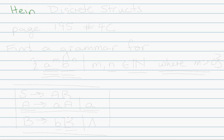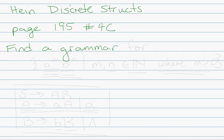I'm going to do a problem from Heinz's Discrete Structures book. The first one I'm going to do is page 195, number 4C. It says: find a grammar for this language, which is a to the m, b to the n, such that m and n are in the natural numbers, where m is greater than zero.